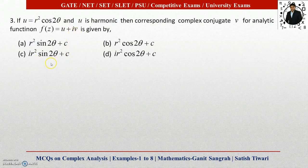Since we are finding v, and the given u = r² cos 2θ appears in option A, we can identify the answer. But if you want to derive it properly, you can use the exact differential equation method, which is easier, or the Milne-Thomson method. Let us use the exact differential equation method.